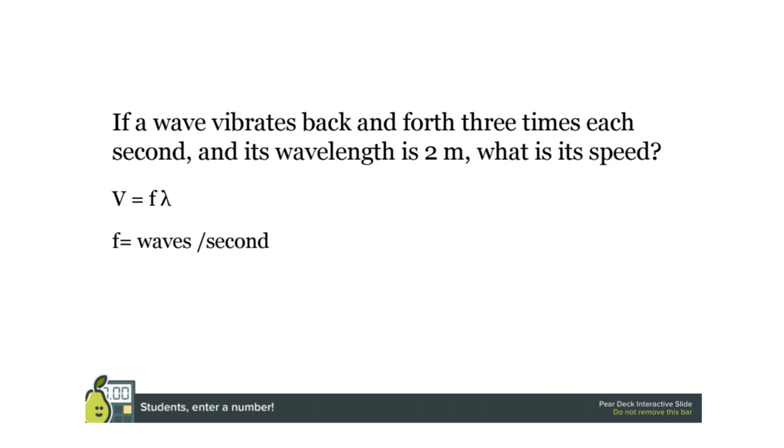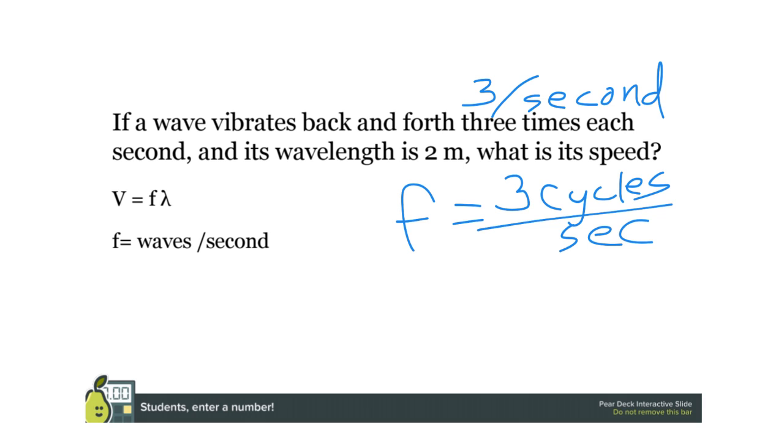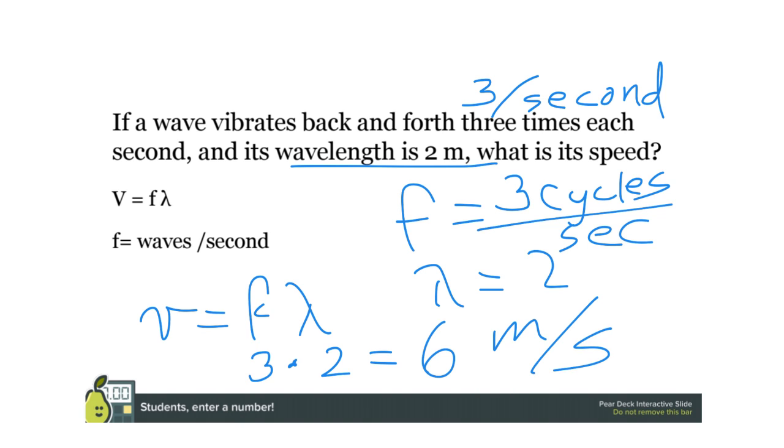Now looking at this formula here. So this has a wave that vibrates back and forth three times each second. That is telling you the frequency—so the frequency is three cycles every second. The other thing we know is the wavelength is two. So to get the speed, it's frequency times wavelength, or three times two, which would be six, and the unit for velocity is meters per second.